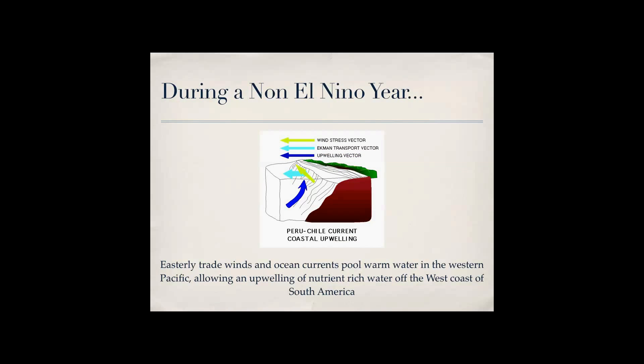But during a non-El Niño year, easterly trade winds and ocean currents pull warm water to the western Pacific, and since it's warm water they want to kind of equalize, so the cold water has to come up from the bottom with all these nutrients so that these organisms can live. And these are called upwellings.